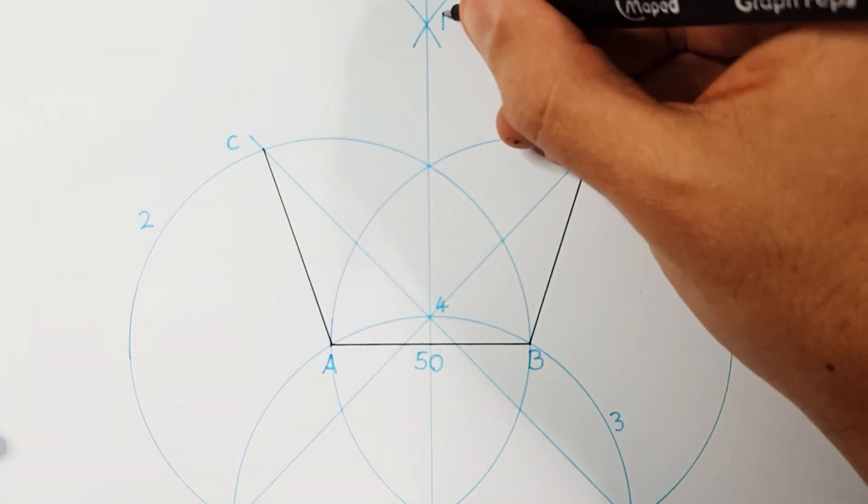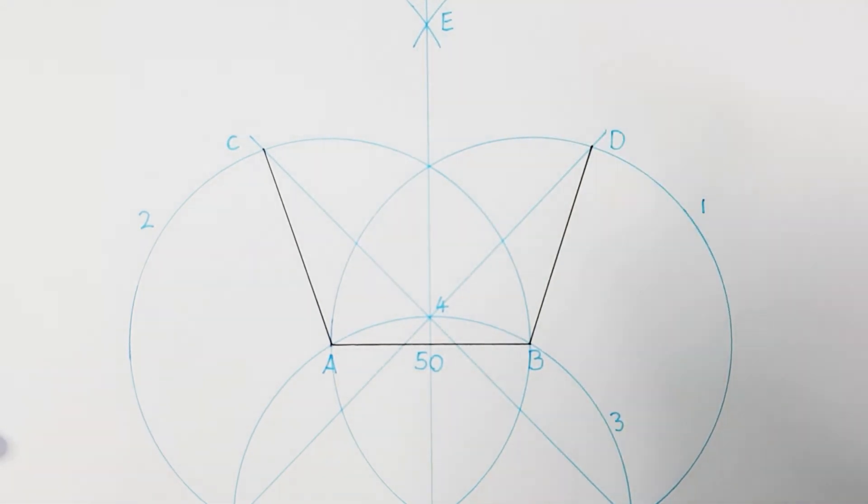After determining this point, we can label it as point E and use point E to complete our last two sides.